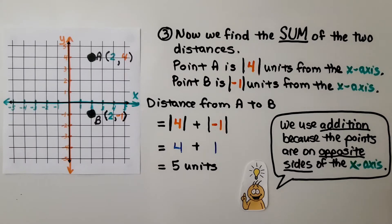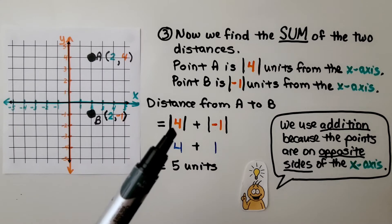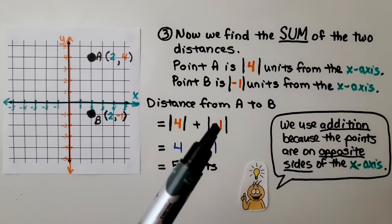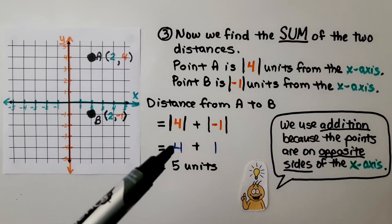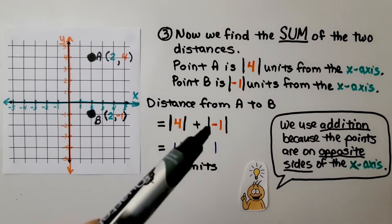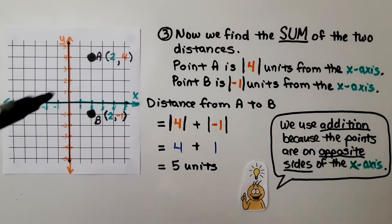Now we find the sum of the two distances. Point A is the absolute value of four units from the x-axis, and point B is the absolute value of negative one units from the x-axis. The distance from A to B is the sum of the absolute value of four and the absolute value of negative one. We use addition because the points are on opposite sides of the x-axis. The absolute value of four is four, and the absolute value of negative one is one. Four plus one is five, so the distance between point A and B is five units.